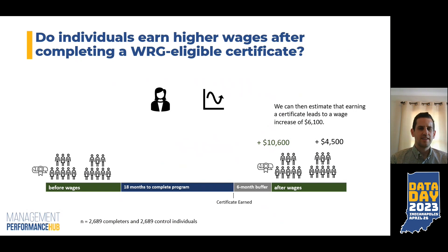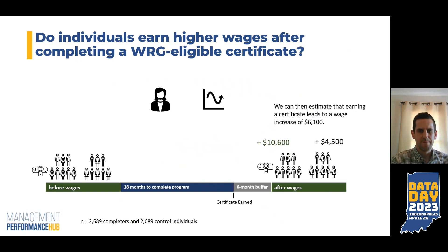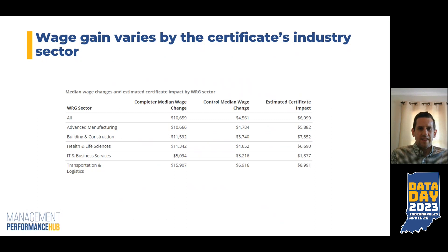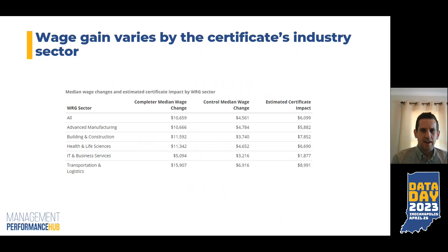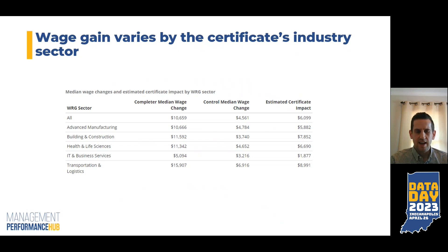We wanted to go a bit deeper in this analysis. It's helpful to see the wage increase across all completers, but we know other attributes — such as the type of certificate earned, an individual's age, and their movement through industries pre- and post-certificate completion — also have an impact on the estimated certificate impact. First we looked at the industry sector of the certificate. If we lump all certificate types together, you see roughly a $6,100 certificate impact in the top right of this table. In each case, we're subtracting the control median wage change from the completer median wage change to get the estimated certificate impact. There's variation depending on what type of certificate was earned — transportation, logistics, and building construction are at the higher end, while IT and business services are at the lower end.